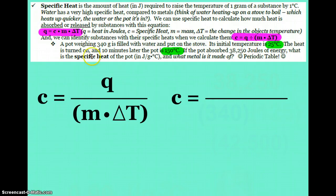So here's our example. A pot weighs 340 grams, filled with water, put on the stove. The starting temperature is 25 degrees Celsius. And 10 minutes later, the pot is 150 degrees Celsius. If I know that the pot absorbed that many joules of energy, what is the specific heat?